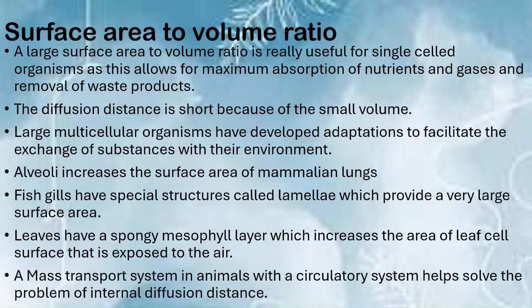So how do large multicellular organisms maximize the surface area to volume ratio? Alveoli, which increase the surface area, are found in mammalian lungs. Fish gills have special structures called lamellae which provide a very large surface area. Leaves have a spongy mesophyll layer which increases the area of leaf cell surface exposed to air. Animals with a circulatory system have a mass transport system which helps solve the problem of internal diffusion distance — this is covered in topic one.